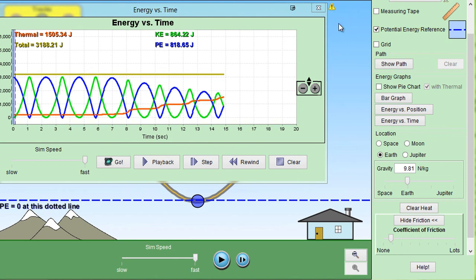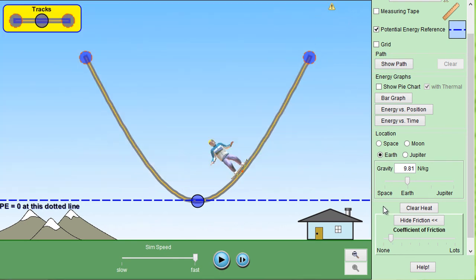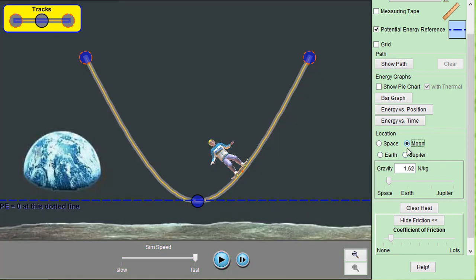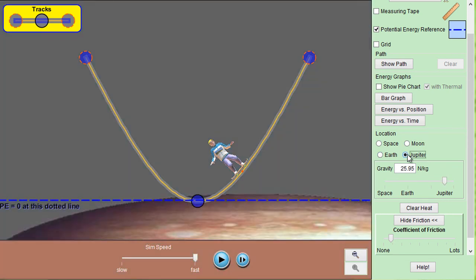And going back to the skater, there are many cool things that you can do with this too. There are some other features. You can do this on other planets, like on the moon or on Jupiter.